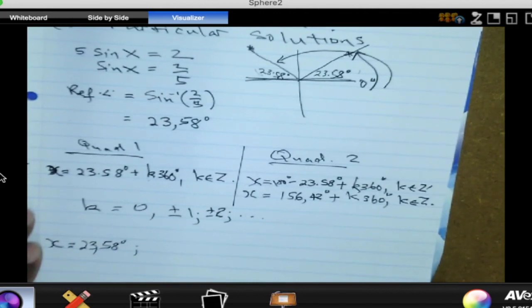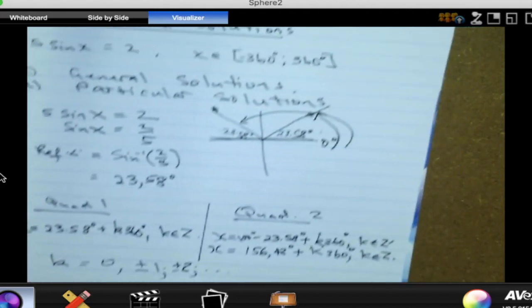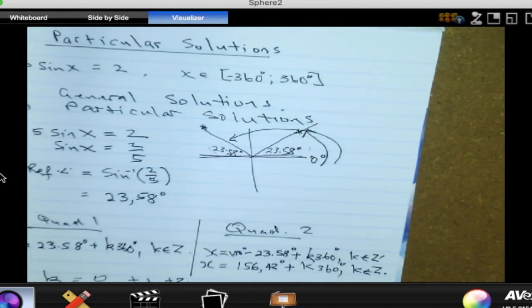If you put K equal to negative 1, so it's now 23.58, that will be subtracted 360 degrees. Negative 336.42 degrees. Okay. Do we agree that that is within the range? It is within the interval? Minus 336.42 is there. So yes, we need to put K equal to negative 1.